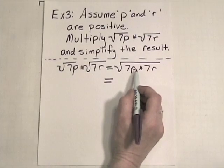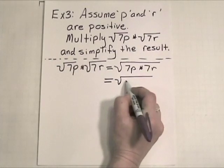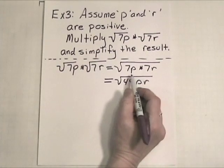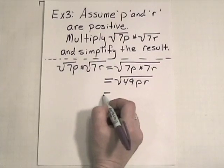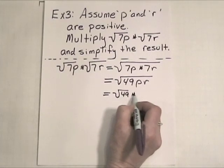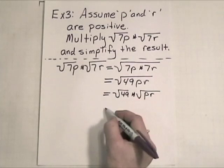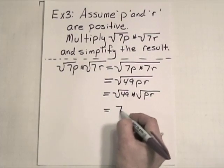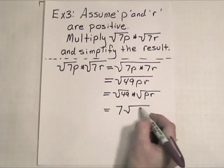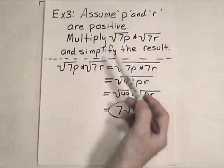That would be 7P times 7R. Well, now let's see here. Multiplication is commutative, so I can take 7 times 7 and get 49. So, that would be 49 times P times R. Well, by George by Jingo, look, we have a perfect square. So, this can be written as the square root of 49 times the square root of P times R. This one is nice. That will square root out to 7. And 7 times the square root of PR can be written like this, 7 square roots of PR. So, there is your product in simplification.